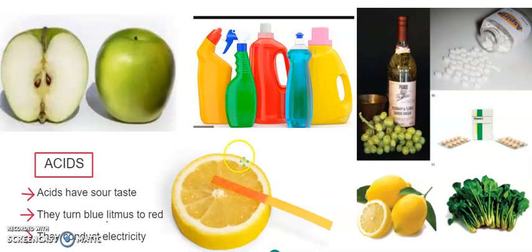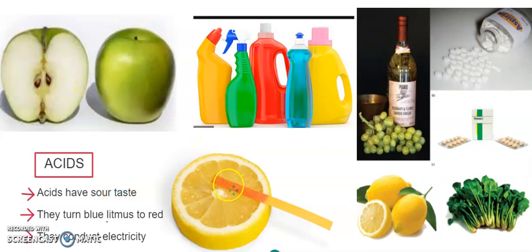What are acids? Basically, acids are those substances which have a sour taste. They are sour in taste like green apple, orange, red wine or white wine. They all have a sourness in them — a natural sourness, or we call it acidity in them.